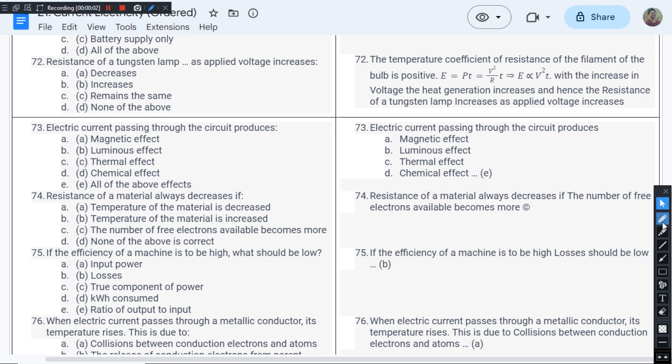This is question number 72 from chapter 1 of RK Rajput's book. The question asks: the resistance of a tungsten filament lamp ___ as the applied voltage increases. Ideally, the resistance that we use in lamps is usually independent of voltage.